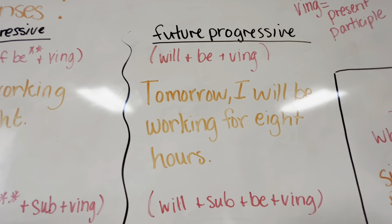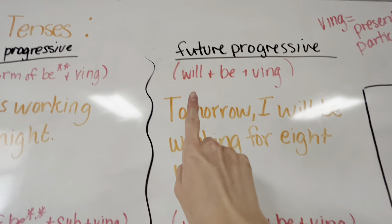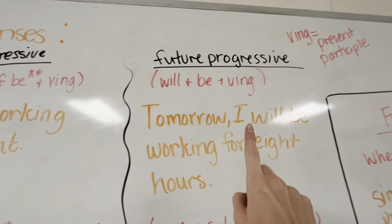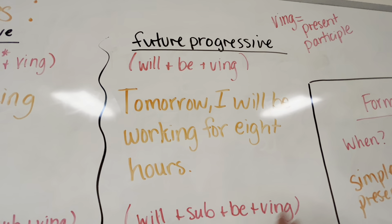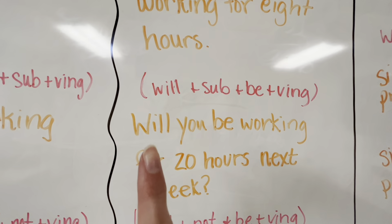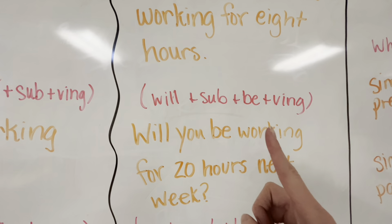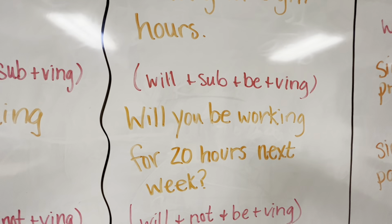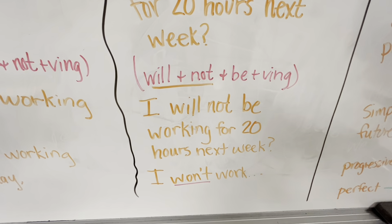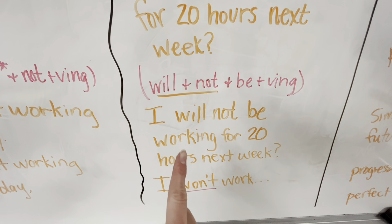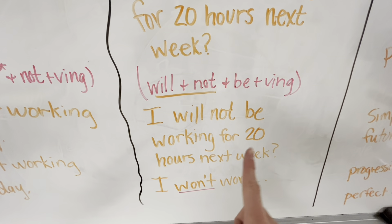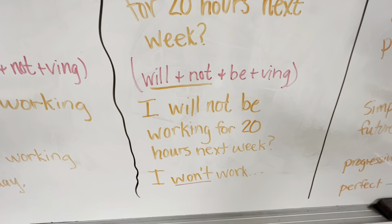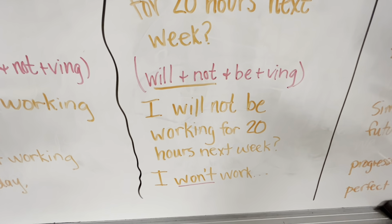Future progressive: will be plus your verb form. Tomorrow, I will be working for eight hours. To make it a question: will, subject, be, verb form — will you be working for 20 hours next week? In the negative: will not, plus be, plus your verb form — I will not be working for 20 hours next week, or I won't be working.